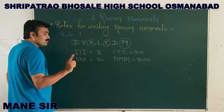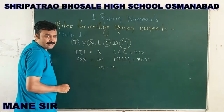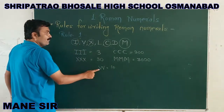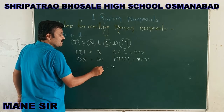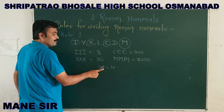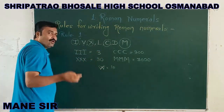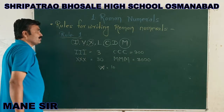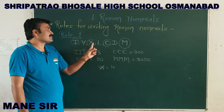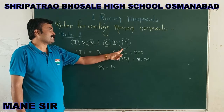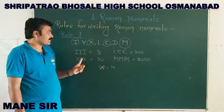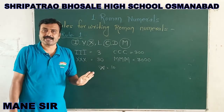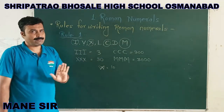Now, if you try to write V two times, some students say V, V means 10 — 5 plus 5 gives 10. But according to Rule Number 1, V as well as L as well as D — these 3 signs we cannot write 2 times or 3 times continuously. V, L, and D are always written only 1 time. So this is our first rule: out of 7 basic Roman numerals, capital I, X, C, and M — these 4 basic signs — can be written 3 times maximum continuously. In other words, capital V, L, and D are never repeated. Keep in mind.